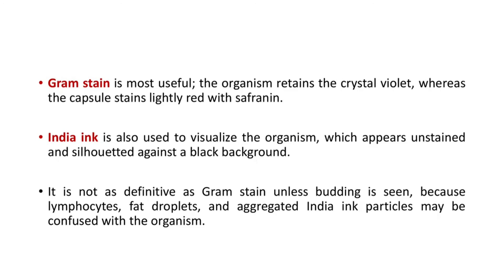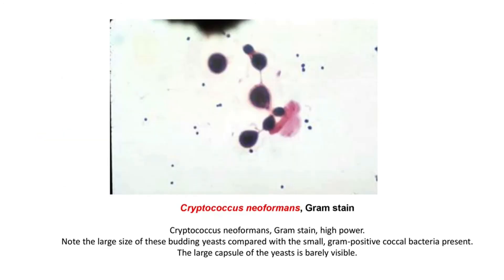Gram stain is most useful — the organism retains crystal violet, whereas the capsule stains lightly red with safranin. India ink is also used to visualize the organism, which appears unstained and silhouetted against a black background. It is not as definitive as Gram stain unless budding is seen, because lymphocytes, fat droplets, and aggregated India ink particles may be confused with the organism. This Gram stain image of Cryptococcus neoformans shows the large size of the budding yeast compared with small Gram-positive cocci, and the large capsule is barely visible.